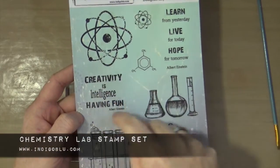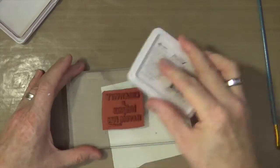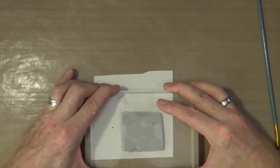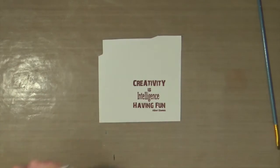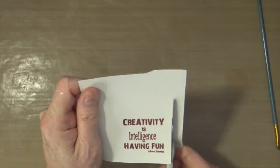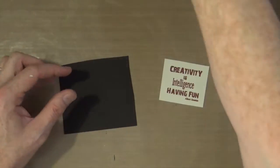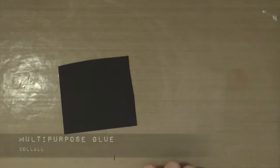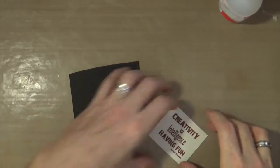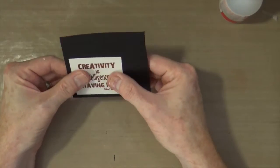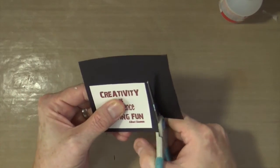Using the Chemistry Lab stamp set again, I'm using this quote that says 'creativity is intelligence having fun.' I'm using the sepia ink to stamp out my quote onto the same card, then cutting it out with scissors. I'm taking black card from my stash and mounting this panel onto the black card. Because I've used multi-purpose glue, it doesn't set instantly—it gives you wiggle room to maneuver your word block so you have an equal border all the way around.